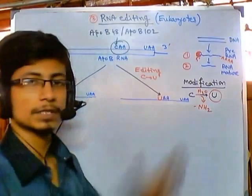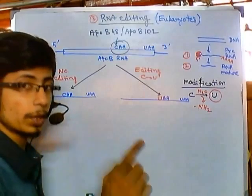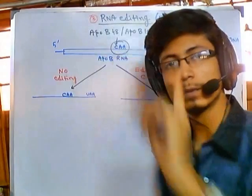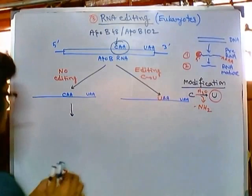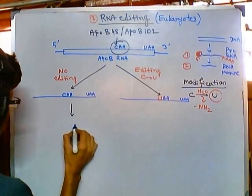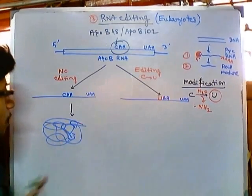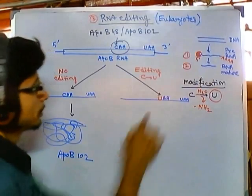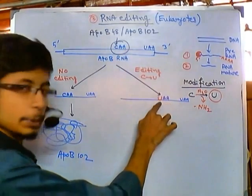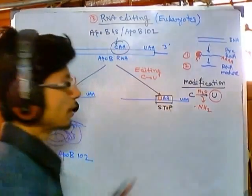Due to this modification from C to U, we get a UAA somewhere in the middle of the gene. When it is not edited, the whole gene codes for one protein — this is called Apolipoprotein B100. It codes for a large protein. But due to this modification, since we incorporated U, this UAA acts as a stop signal for translation — a termination point.